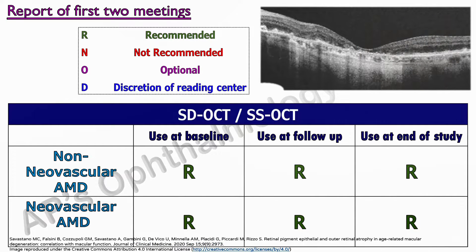OCT is an integral part of retinal evaluation and thus is recommended at all stages of trials involving AMD. Volume scans should cover an area of at least 6 x 6 mm. OCT should be performed at every visit with a distance of not more than 120 microns between single line scans. Where multiple image averaging is possible, at least 10 line scans should be averaged for noise reduction.